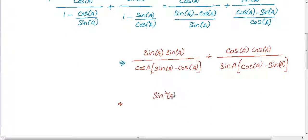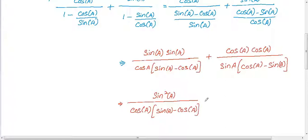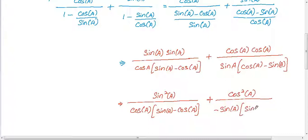Now simplify further. Sin a times sin a becomes sin squared a, and we have cos a in the denominator, so we write cos a times sin a minus cos a. In the second term denominator, we have sin a times cos a minus sin a. To write that in the form of sin a minus cos a, we take minus outside, so we get minus sin a times sin a minus cos a.